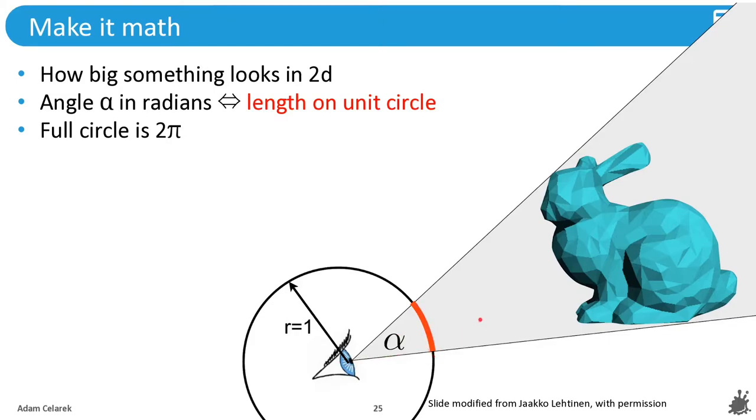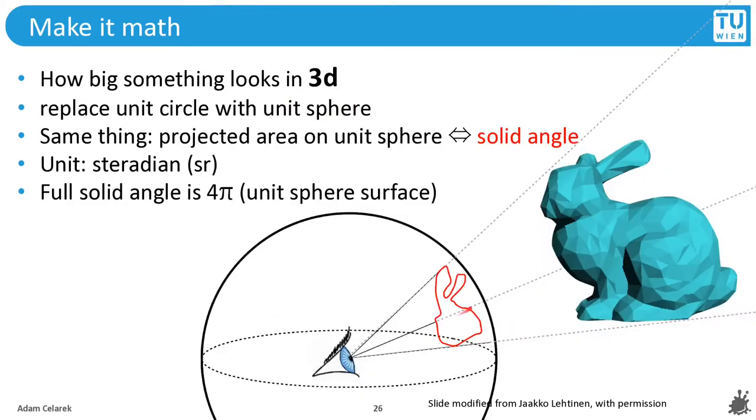When we go to 3D we have the solid angle and the rest works pretty much the same, but the unit is now steradians and the full solid angle is 4π, which is the surface of a unit sphere.